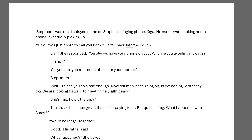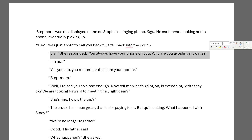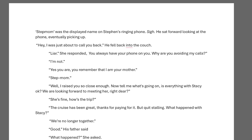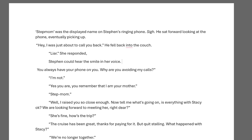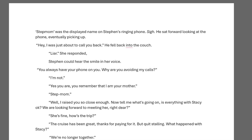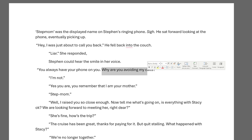Moving on: 'Liar,' she responded. 'You always have your phone on you. Why are you avoiding my calls?' This could easily read as angry depending on how it's delivered. So how do we lighten it up? 'Steven could hear the smile in her voice.' This automatically changes the scene and changes her tone for our reader. He could hear the smile — that's something we can genuinely pick up when someone is smiling while talking. 'You always have your phone on you' becomes a gentle ribbing.